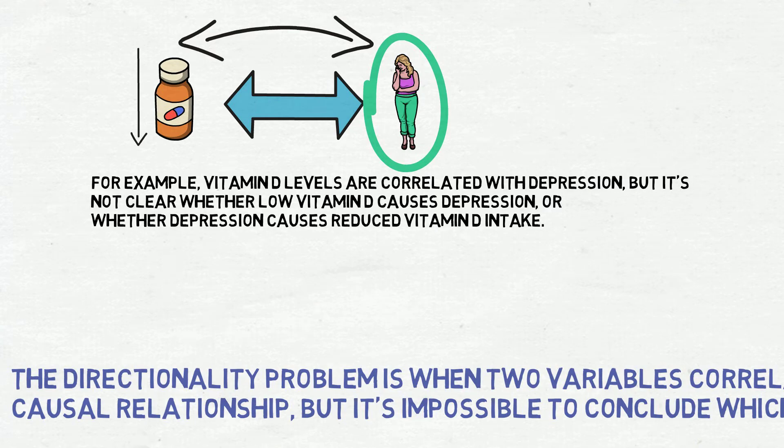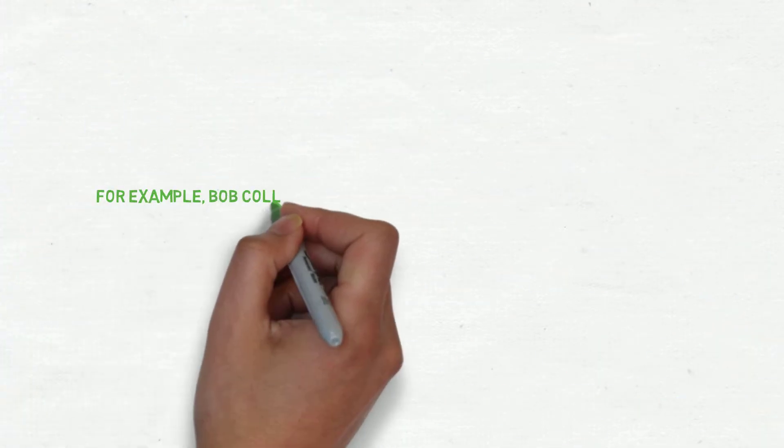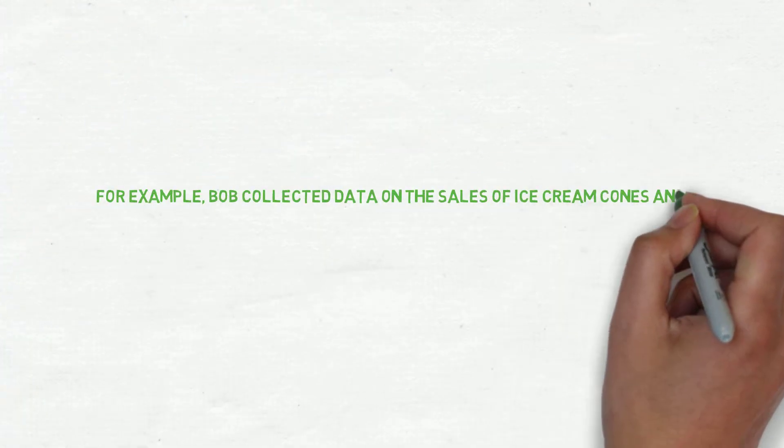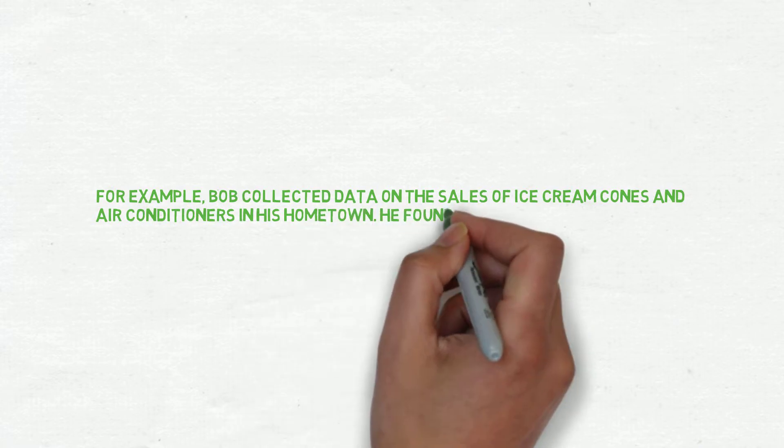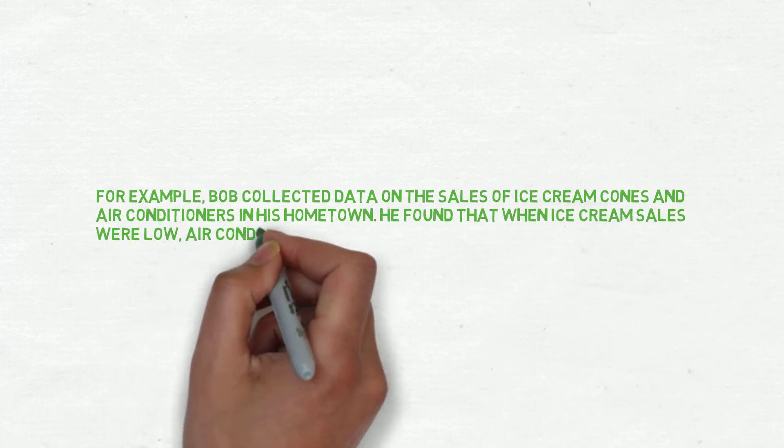These two problems are the main reason why correlation isn't causation. Let's see another example: Bob collected data on the sales of ice cream cones and air conditioners in his hometown. He found that when ice cream sales are low...